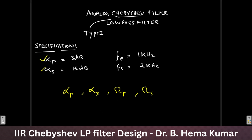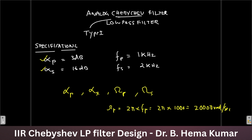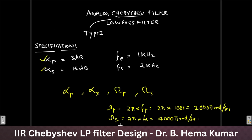We calculate ωp as 2π × fp = 2π × 1000 = 2000π radians per second. Similarly, ωs = 2π × fs = 2π × 2000 = 4000π radians per second. So now we have all four required values: ωp, ωs, αp, and αs. This completes Step 1 — identifying the correct parameters.